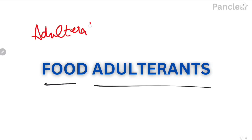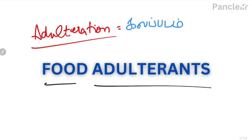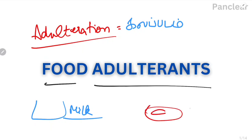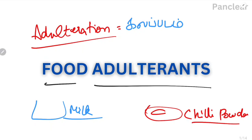Adulteration. In this video, we will see adulteration. For example, you can add chili powder to chili powder. This chili powder is made of red powder — that is brick powder — and we can use it as a color. If we go to a man-made color, it will not be natural. That causes disease to humans.